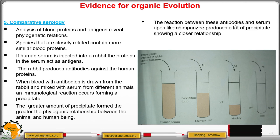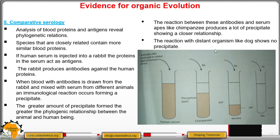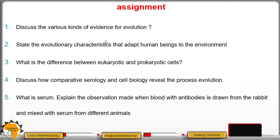The reaction between these antibodies and serum from apes like chimpanzees produces a lot of precipitate, showing a closer relationship. Where there is precipitate, the relationship is close; where there is no precipitate, the relationship is distant. There is no close relationship between dogs and human beings based on this test. That marks the end of the lesson.